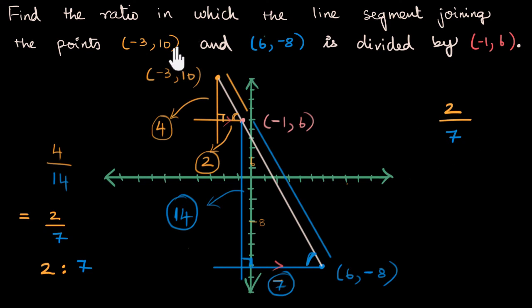We could have even deleted some information from this. If I had not given the y-coordinates at all, you can see you can still solve the problem. I just have to say it's (-3, something), (6, something) and (-1, something). Or I could have flipped it just given the y-coordinates and that's enough. This question actually has way more information than needed to solve the problem.